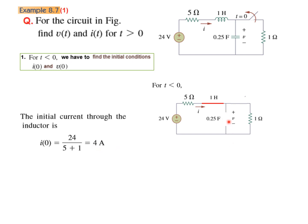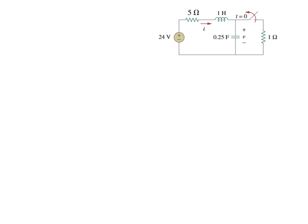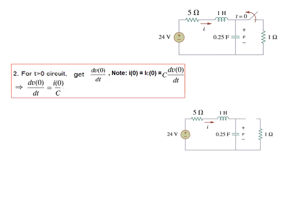Now we can find the voltage. The voltage will be the same as across the 1 ohm resistance. We know the current is 4 ampere, so 4 multiplied by 1 gives 4 volt. So V(0) equals I(0) into 1, that is 4 volt. That is our first step. For the second step, dV0/dt, we use the formula. The current through the inductor I(0) is 4 and C is 0.25, so dV0/dt is 16.